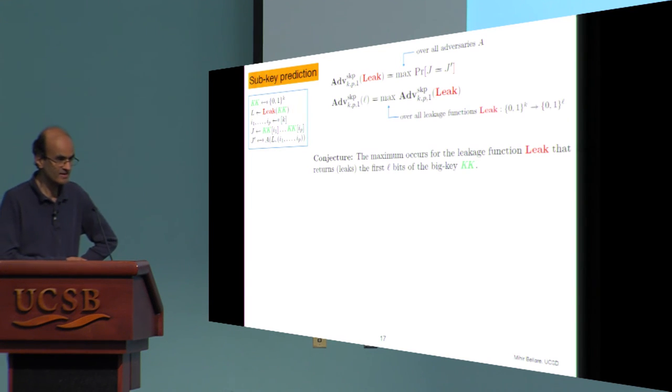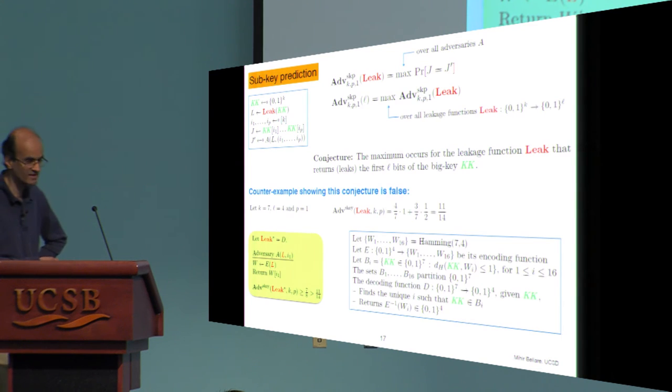So this is probably the main or perhaps only technically novel thing in the paper. And it's quite subtle. So perhaps I'll give a little bit of a sense of what goes on in this subkey prediction lemma. One evidence of the subtlety is that if you look at this, you might think that the naive strategy for the adversary of simply leaking a certain number of bits of the key is the best. If I'm allowed to leak four bits of a seven bit key, why don't I just leak the first four? Why is that any worse than anything else? So maybe the maximum occurs there. And what we illustrate here is that it doesn't.